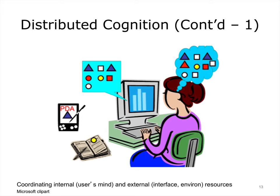Distributed cognition emphasizes the process of coordinating internal and external representations. As one becomes a more skilled user, the process of coordinating such representations becomes more effortless. A more optimal design will strive to find the right balance. A display that offers every single function on the first display is endeavoring to maximize the availability of external resources. The downside is that the display is likely to be so cluttered that finding the right button or link could prove to be difficult. A system such as a database that necessitates that you recall complex query commands has the opposite effect of requiring that you rely entirely on your memory or internal resources. Neither option is optimal.